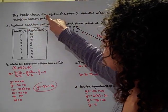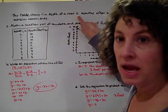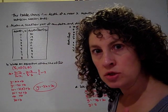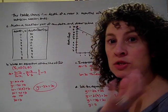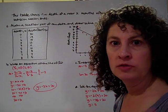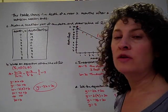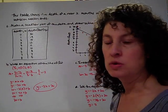We've got a table and the table shows the depth of a river X months after a monsoon season ends. So let's just clarify what a monsoon is. A monsoon season is an area of the world, lots of Asian countries have this, where it rains for a long period of time.